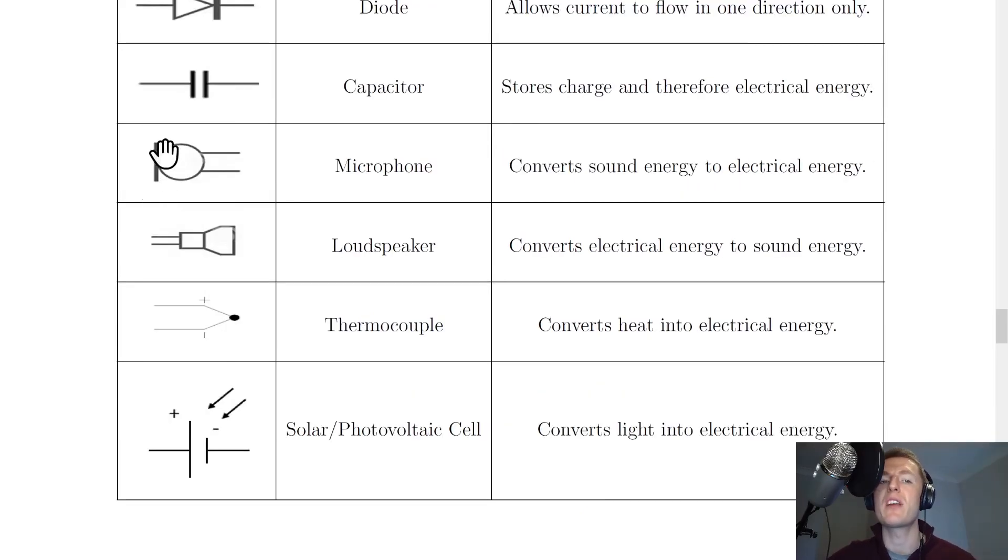Next, we have a microphone, which has a thick line, a circle, and then two prongs on the end. And a microphone converts sound energy to electrical energy. Next, we have the loudspeaker. And you'll notice again, we have two prongs, but we then have a sort of rectangle and a more loudspeaker type shape there. And the loudspeaker converts electrical energy to sound energy.